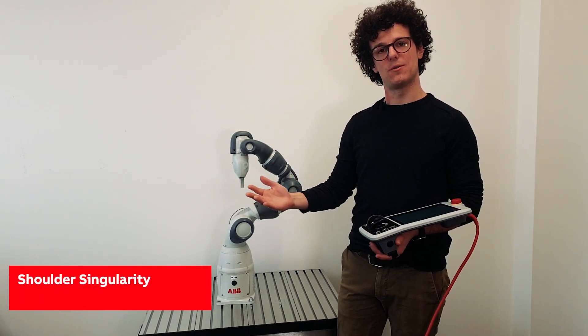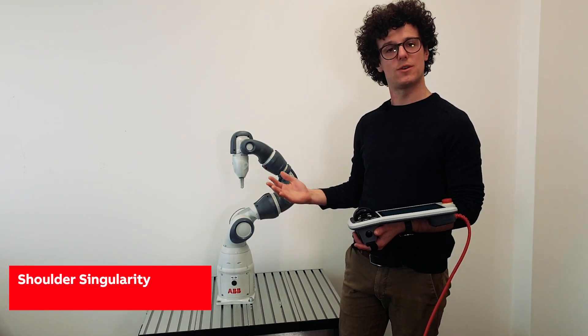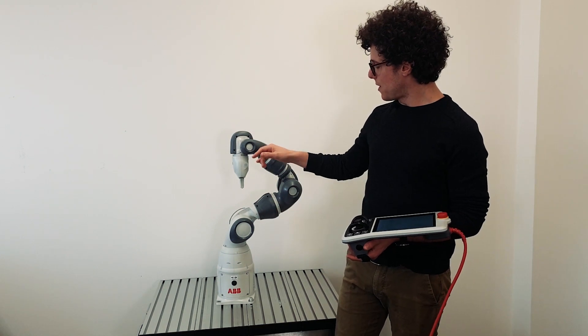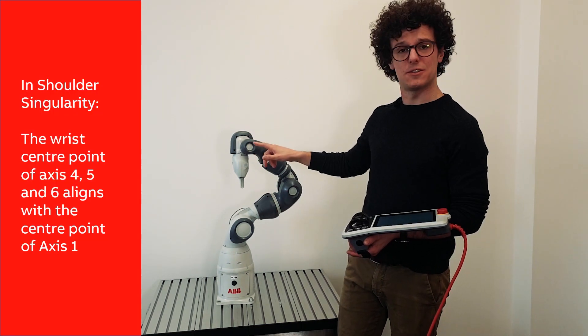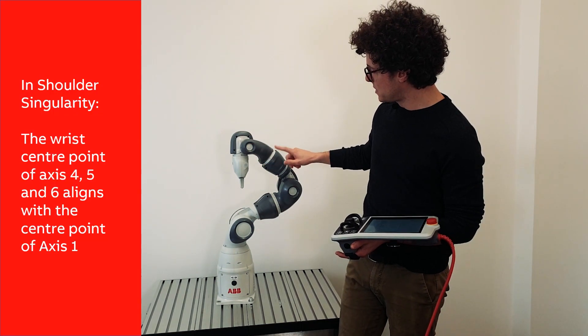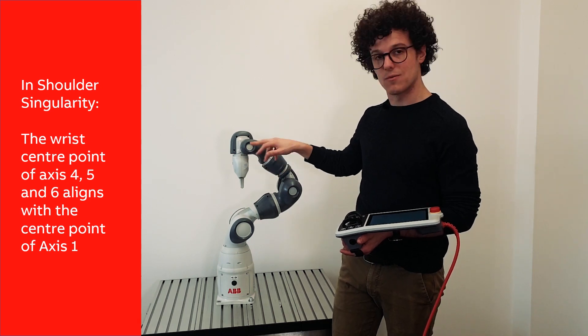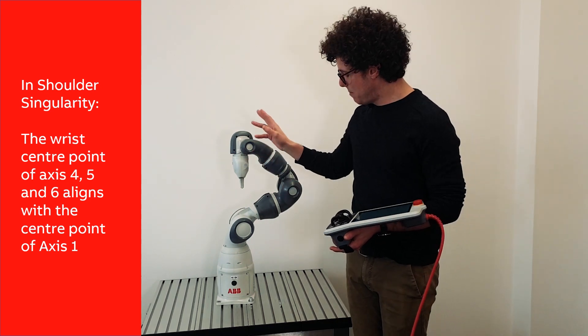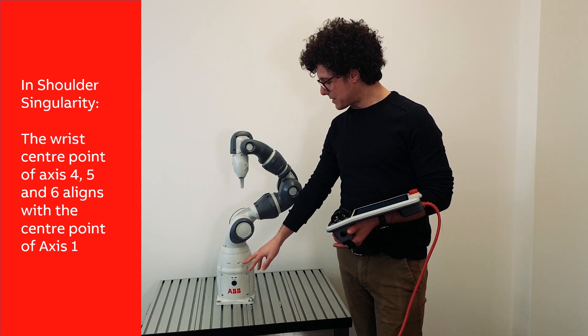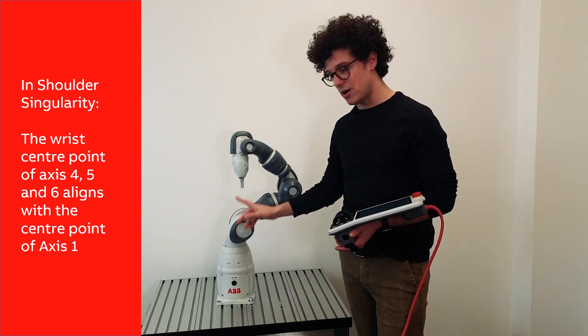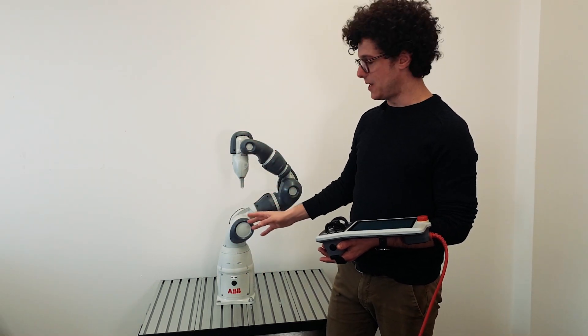The second type of robotic singularity is the shoulder singularity. This singularity occurs when the wrist center point, so the point where axes 4, 5, and 6 of the robot wrist intersect, becomes aligned to the axis that goes out from joint 1.